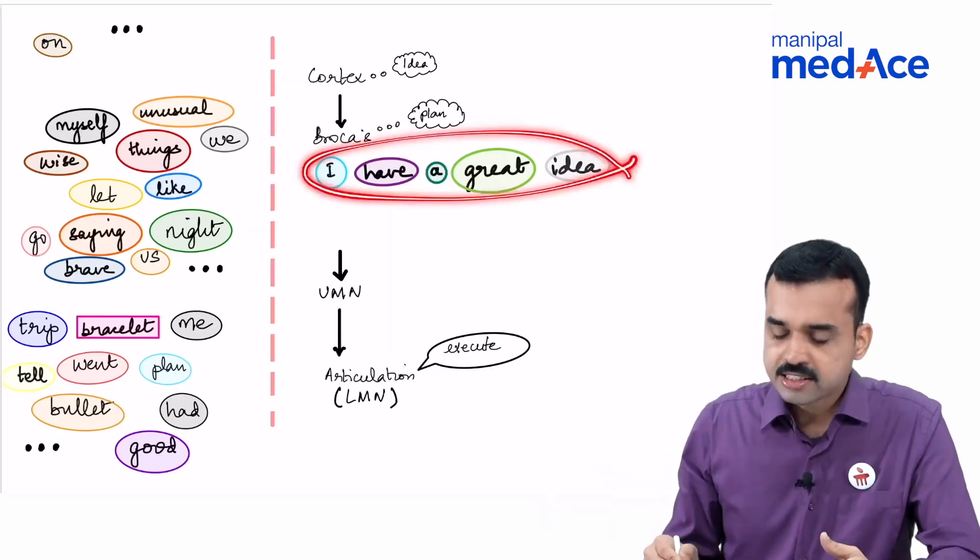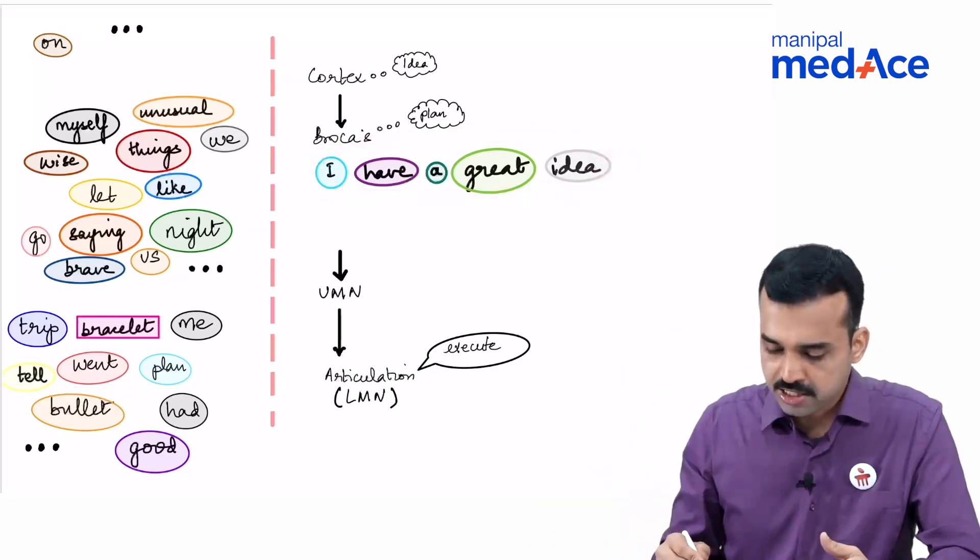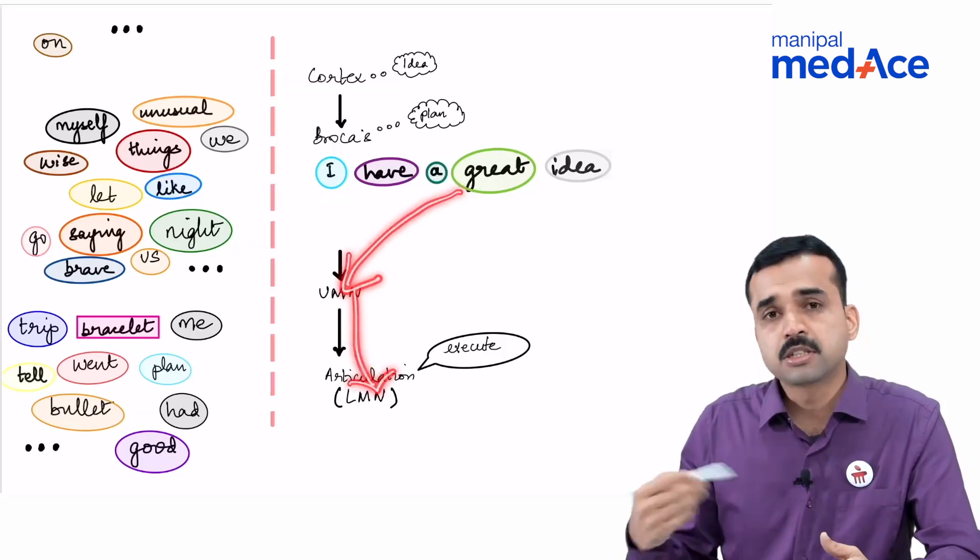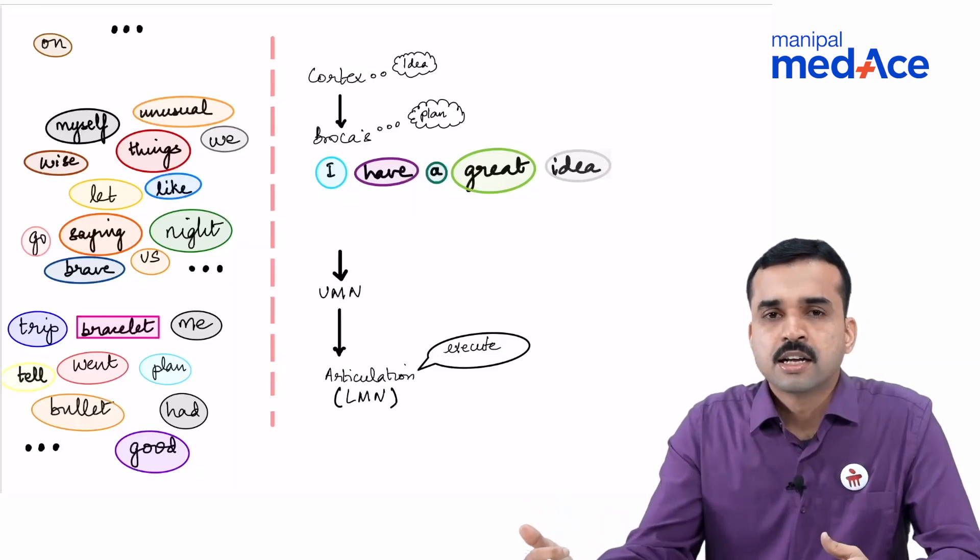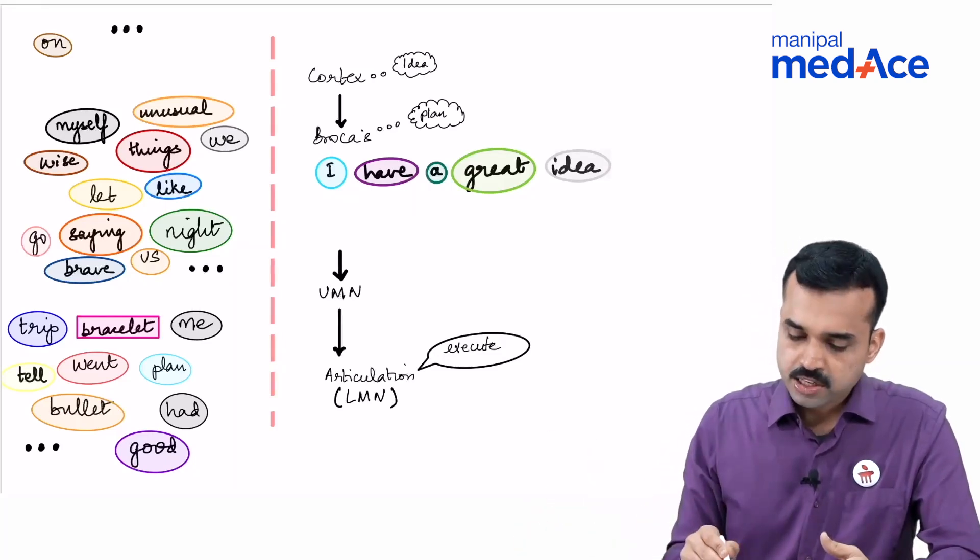And once this sentence has been formed at the level of the Broca's area, it will convey this to the UMN, the LMN, muscles of articulation. It will come out and you will be able to hear this. So this is how Broca's area functions.